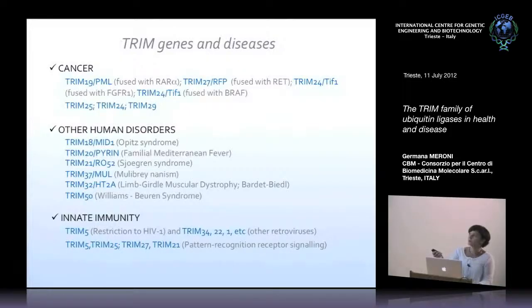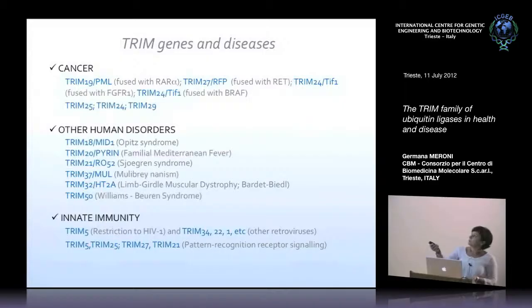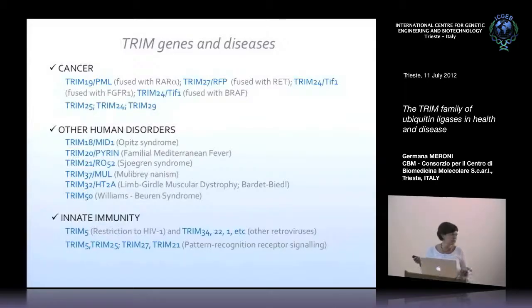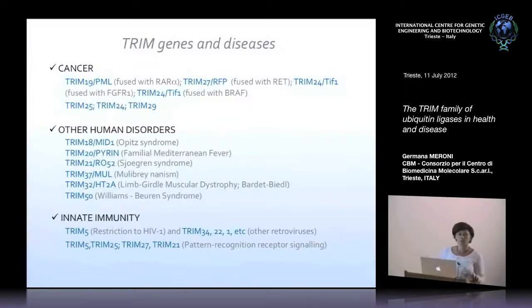The most famous and best-known Trim family member is PML, also known as Trim19, which is found as an oncogenic fusion with RARα in acute promyelocytic leukemia. Apart from PML, some other Trim genes are fused upon chromosomal translocation in different kinds of tumors. Trim proteins are involved in cancer not only as oncogenic fusions, but also as either oncogenes or tumor suppressors per se, and often this is context-dependent, depending on the tissue.